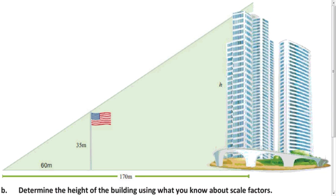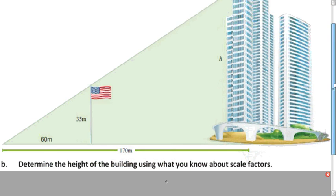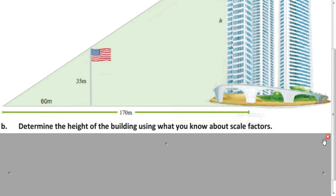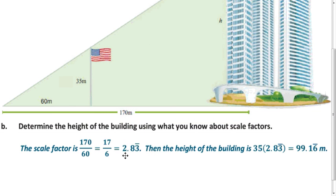Try to figure out what the height of the building is by using scale factors. The scale factor here is an enlargement, so we're looking at 170 divided by 60, which gives us 2.8̄3̄. We multiply the scale factor by the height of the flagpole to find out it's 99.1̄6̄ meters.